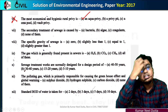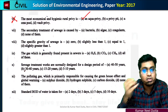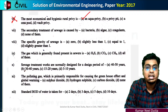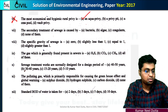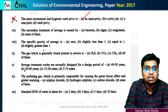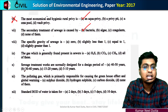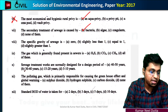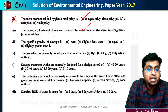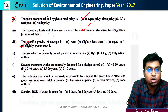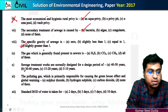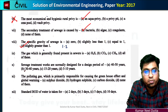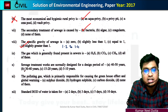The secondary treatment of sewage involves bacteria. The specific gravity of sewage is slightly greater than 1 — specifically between 1.001 and 1.002, slightly greater than water.